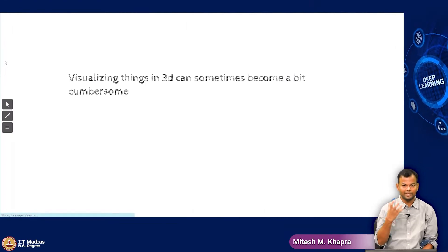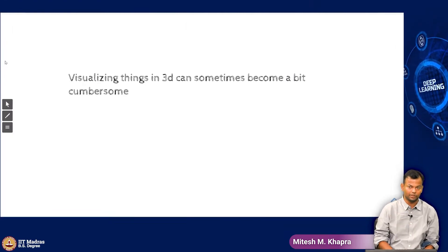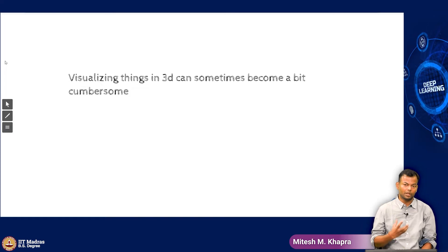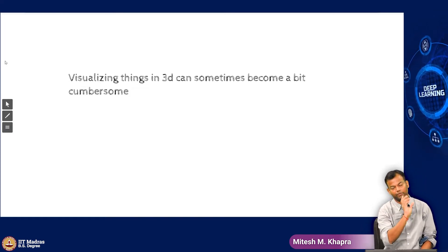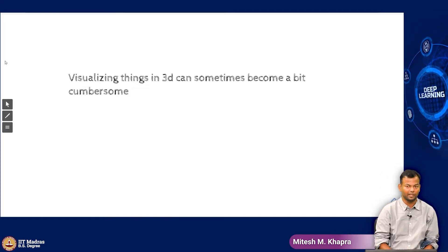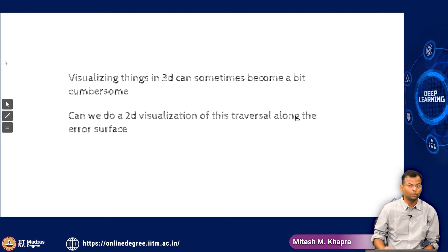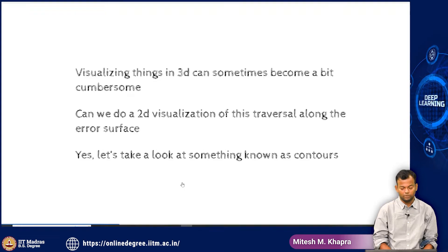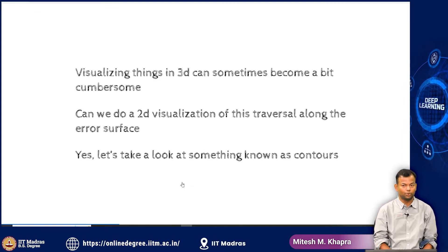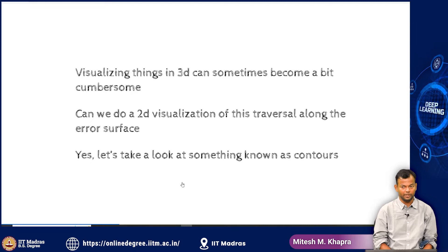The idea here is that visualizing things in 3D can sometimes become a bit cumbersome. At least if images are static, you can only view them from a certain angle. So, can we just do a 2D visualization of this traversal along the error surface? To do that, we need to know what contours are.